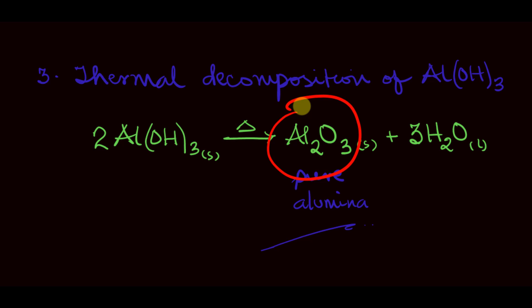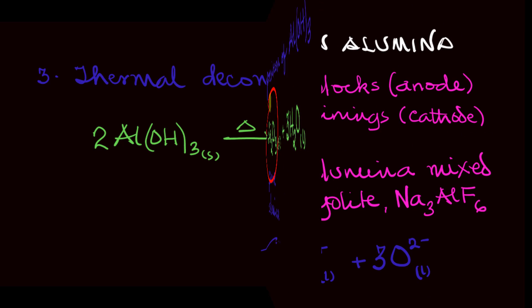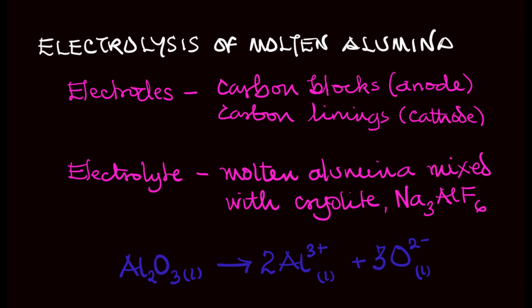The next step, which is electrolysis of molten alumina, begins the Hall-Héroult process. In this process, the electrodes used are carbon blocks which make up the anode and carbon linings which is the cathode. The electrolyte is molten alumina mixed with cryolite Na3AlF6.